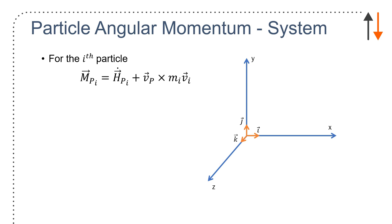So what happens if you have a system of particles? We have, for example, three particles that we're looking at. And we can define with respect to some center of mass, g.